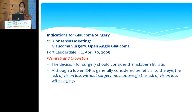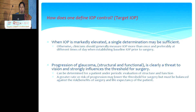In the second consensus meeting on glaucoma surgery, Weinreb and Crosstin said that the decision for surgery should consider the risk-benefit ratio. Although a lower IOP is generally considered beneficial to the eye, the risk of vision loss without surgery must outweigh the risk of vision loss with surgery. How does one define IOP control, i.e. target IOP?